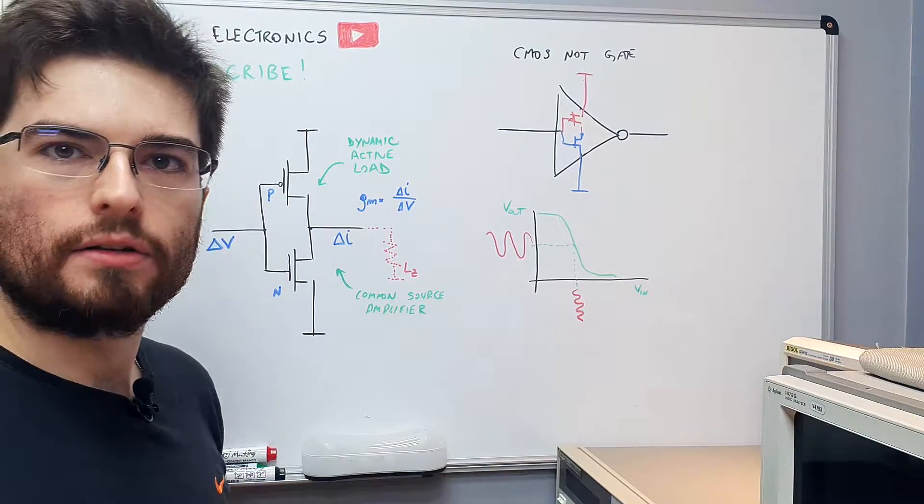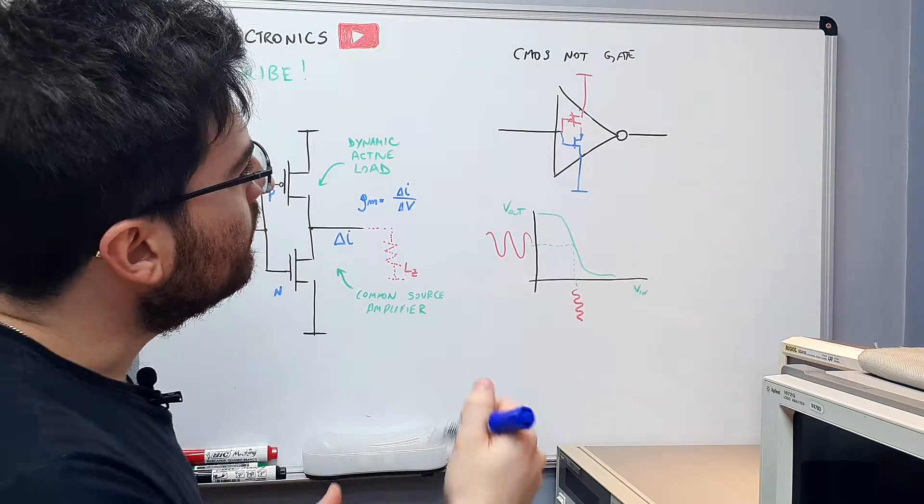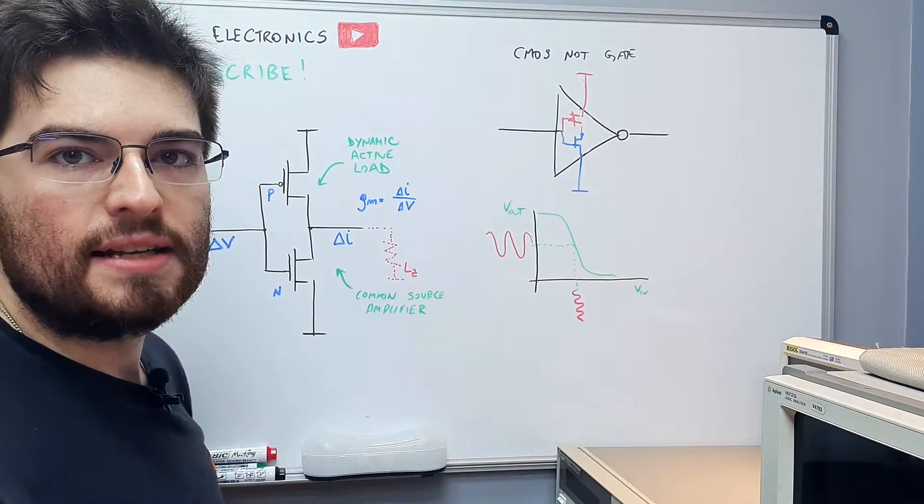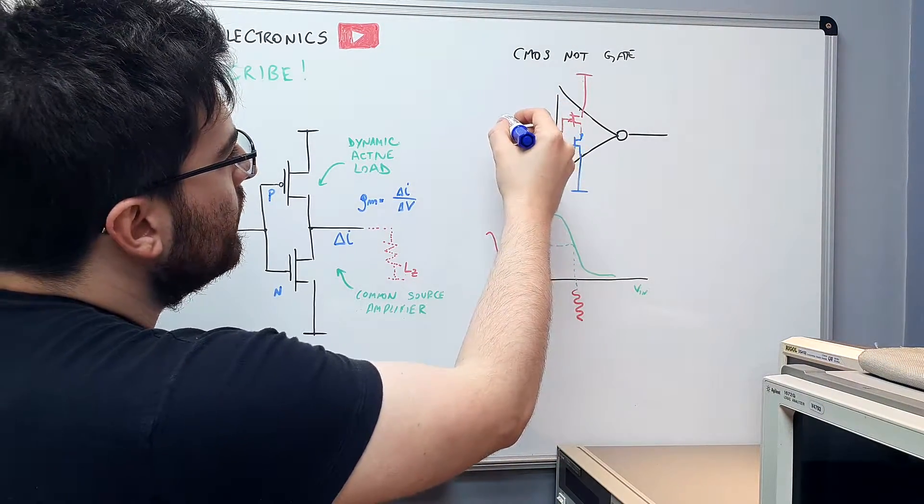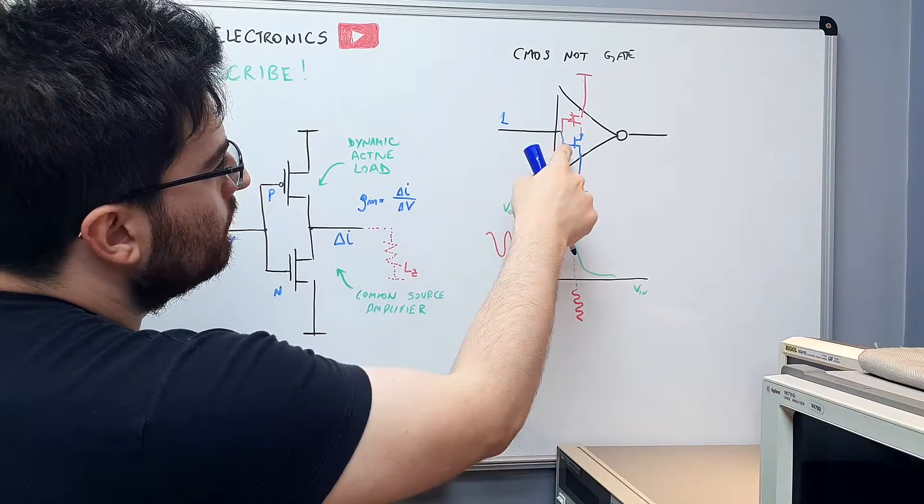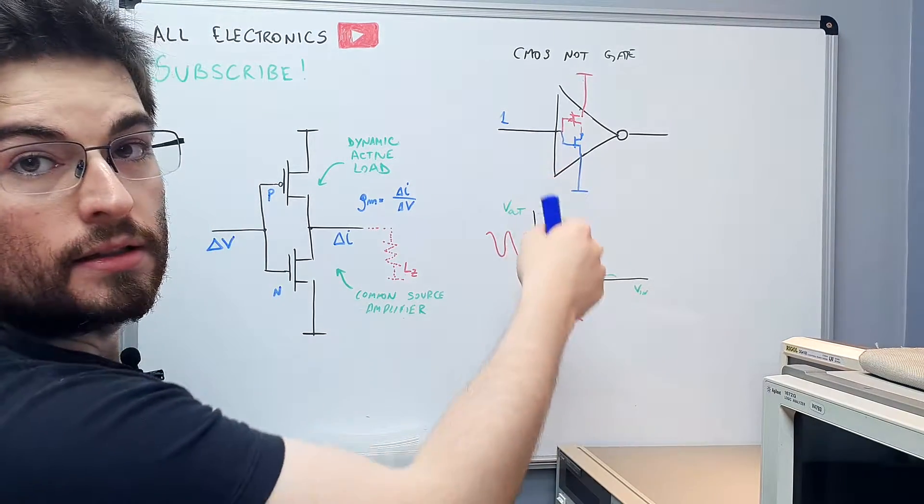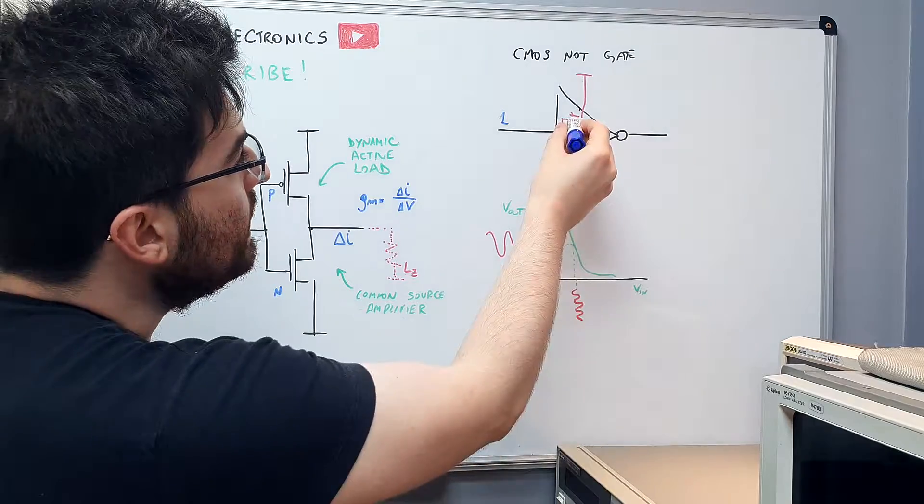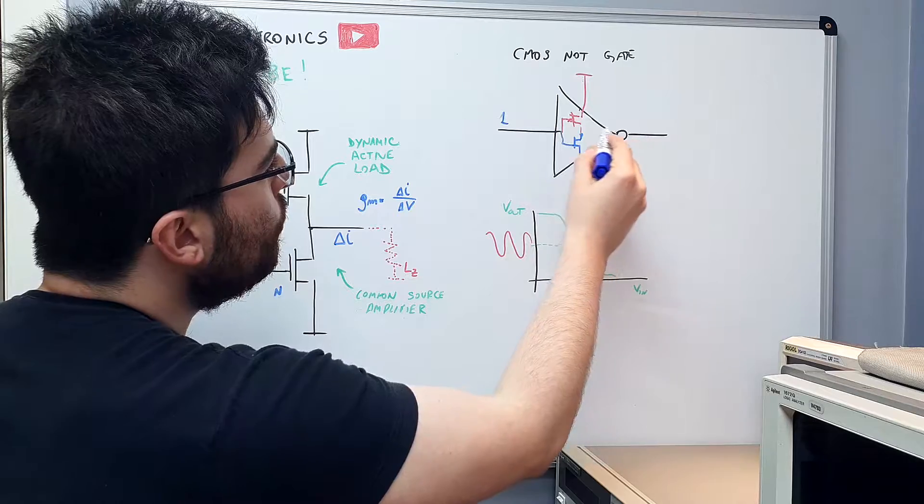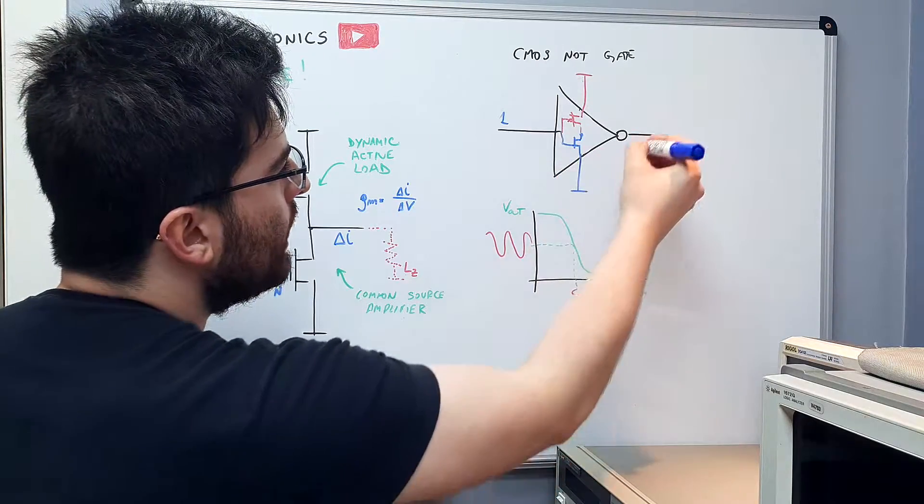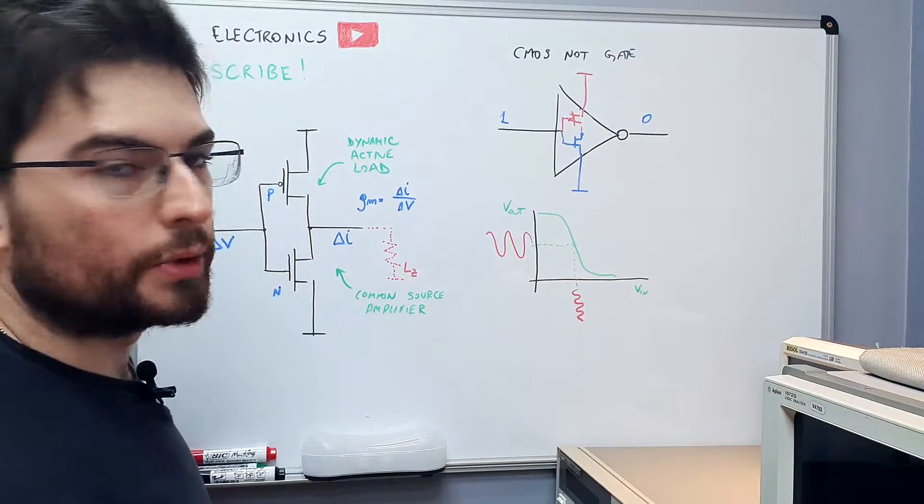When we think on digital logic we think that these devices are switches. When the input signal is high, the N device is turned on and the P device is turned off. So this device pulls the output low and you have a zero on the output.